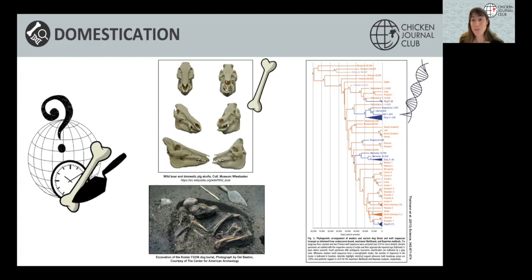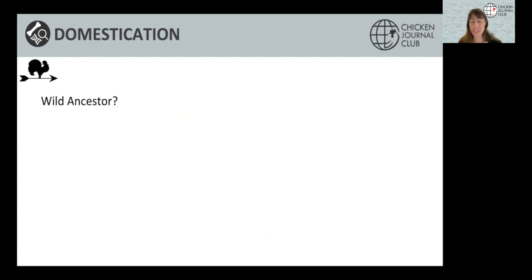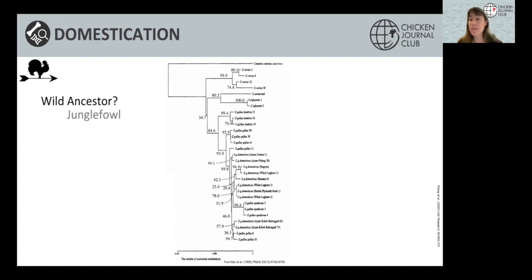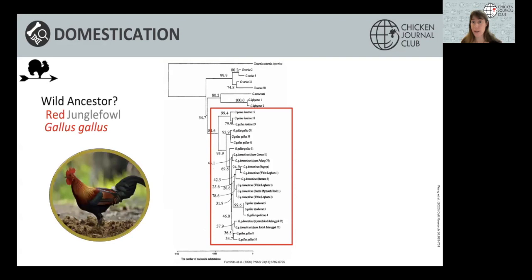When it comes to chickens, what was the wild ancestor? We know it was the jungle fowl, and there are four species of jungle fowl in South and Southeast Asia. Back in 1996, Fumihito and colleagues, armed with fragments of modern genomes, showed that Gallus gallus domesticus — the domestic chicken — fell within the Gallus gallus clade. This means the main wild ancestor of domestic chickens was the red jungle fowl, Gallus gallus.